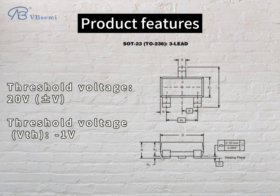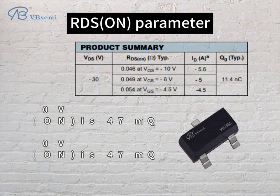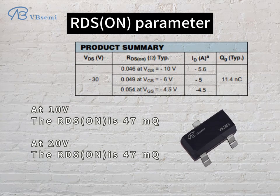Threshold Voltage VGS: -2.0V. Threshold Voltage VTH: -1V. RDS(on) parameter: at -10V, the RDS(on) is 47mΩ; at -20V, the RDS(on) is 47mΩ.